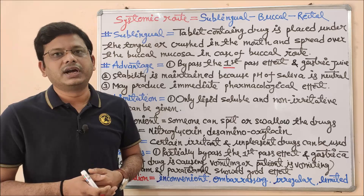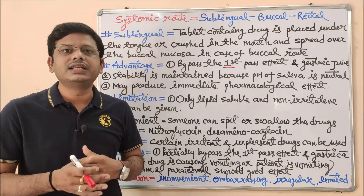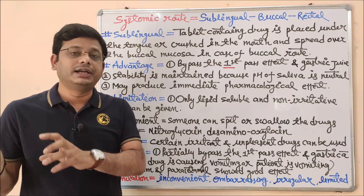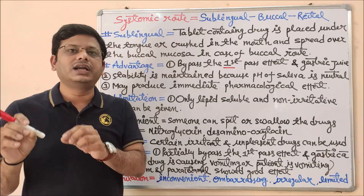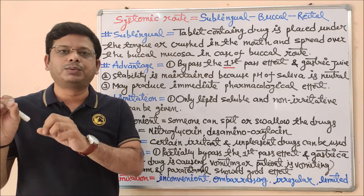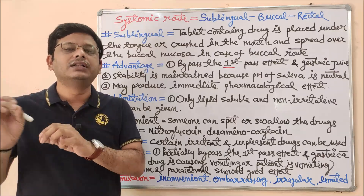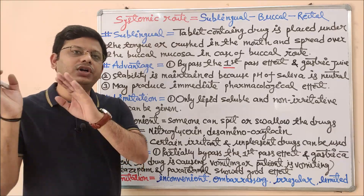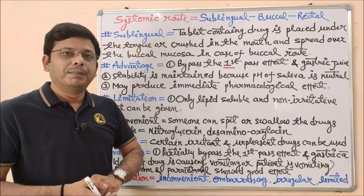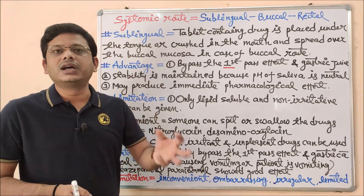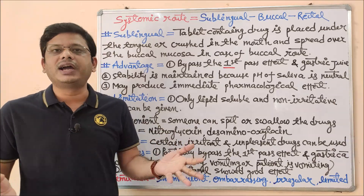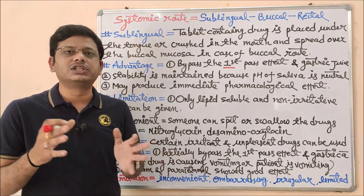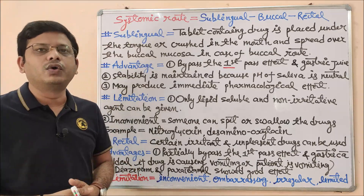The second important advantage is that the drug will not be destroyed by gastric juice. In case of oral route, the drug goes to the stomach where there is acid called gastric juice. If the drug is acid labile — meaning it has the property to get destroyed in the presence of acid — it will not produce its desirable effect. But in sublingual and buccal, the drug is not going to the stomach, so it is protected from acid degradation and produces its desirable effect by moving directly to the bloodstream.